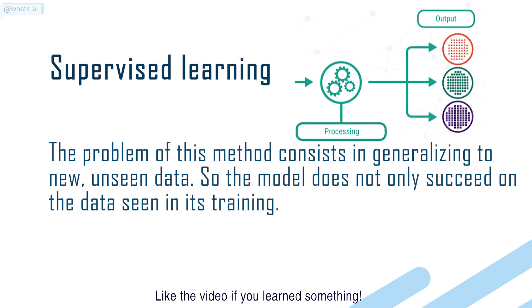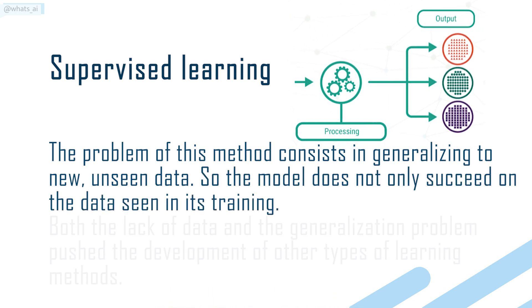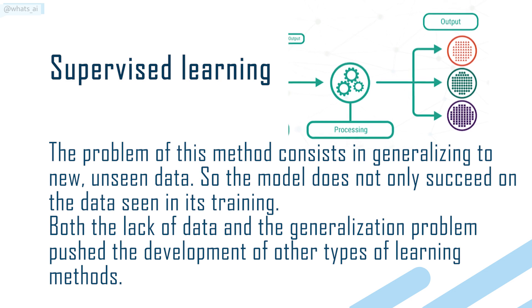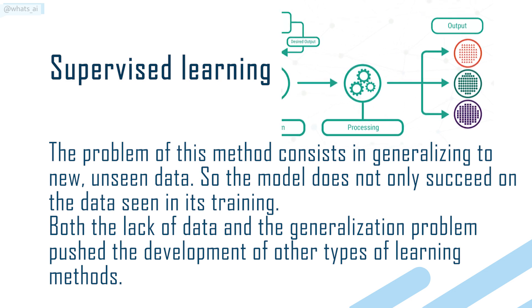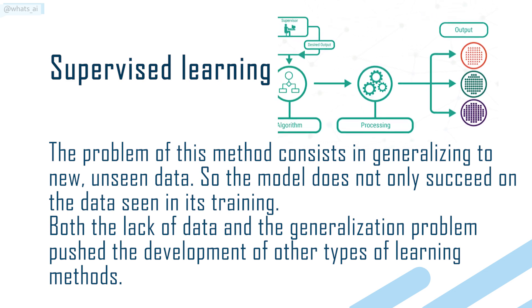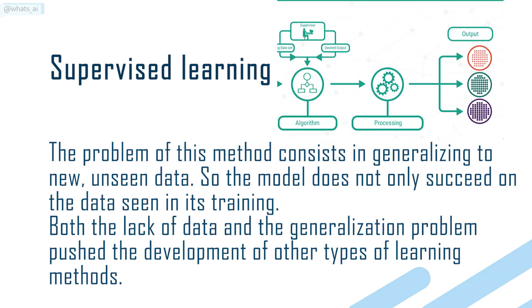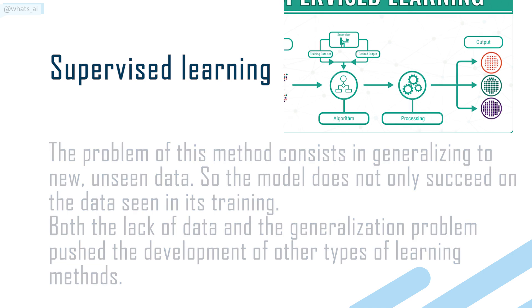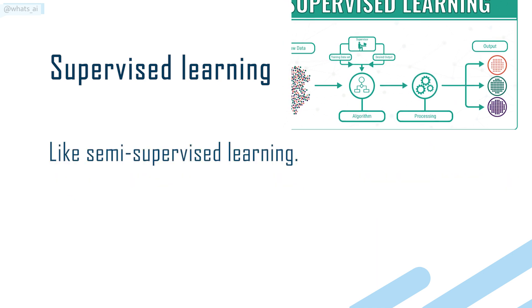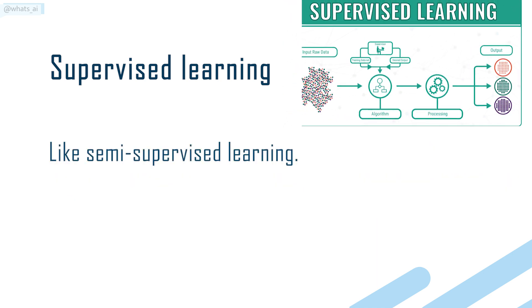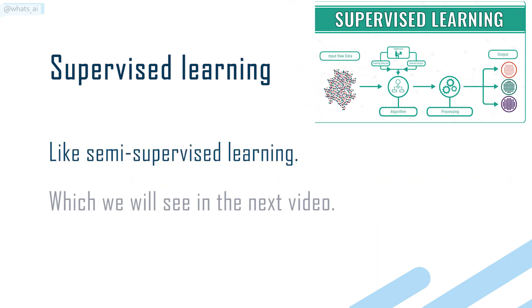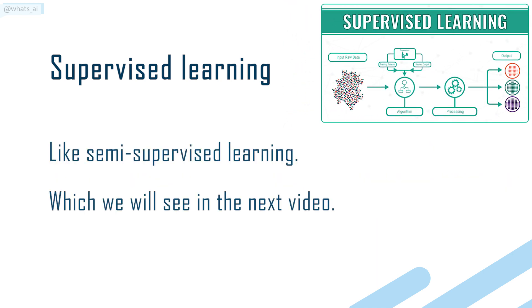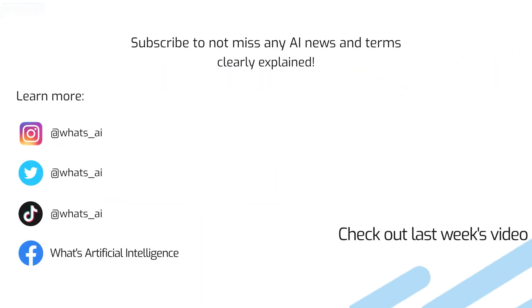So the model does not only succeed on the data seen in its training. Both the lack of data and the generalization problem pushed the development of other types of learning methods, like semi-supervised learning, which we will see in the next video.